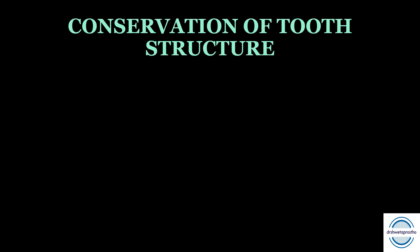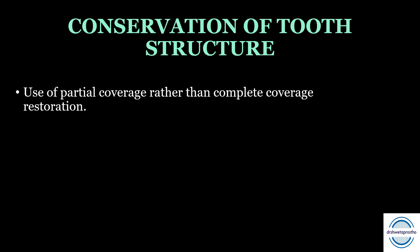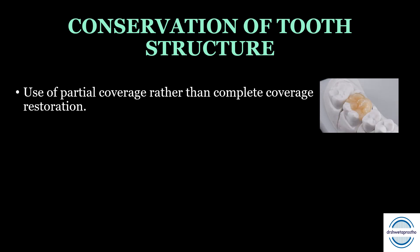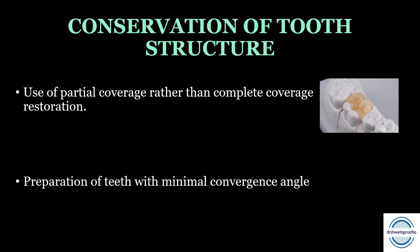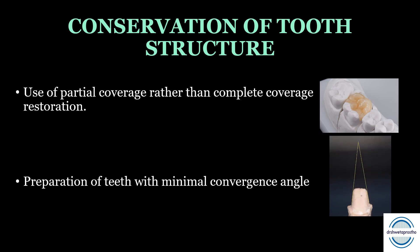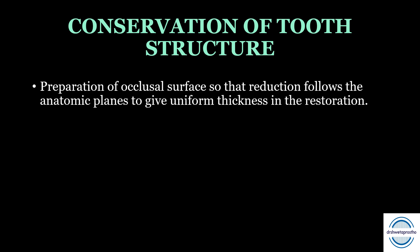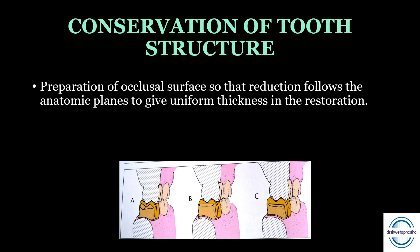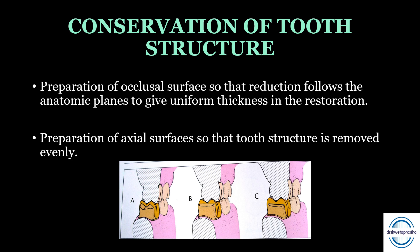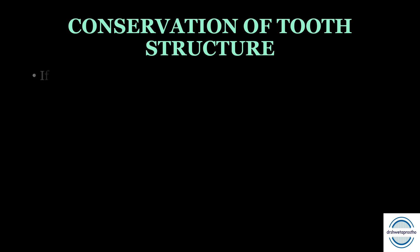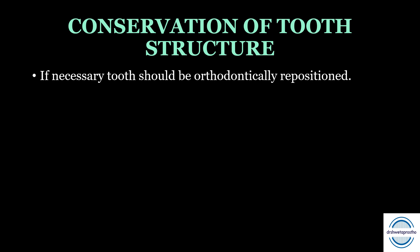Next is conservation of tooth structure. Whenever we talk about biological principles, we say to conserve tooth structure as much as possible. This can be done first by use of partial coverage crowns rather than complete coverage restorations wherever possible. Second, preparation of the teeth should be minimal, achieved with a minimal practical convergence angle. The occlusal surface should be reduced following the anatomical planes, giving a uniform thickness to the restoration. The axial surface should be uniformly and evenly removed. If necessary, the tooth should be orthodontically repositioned rather than over-reduced to correct tilting.